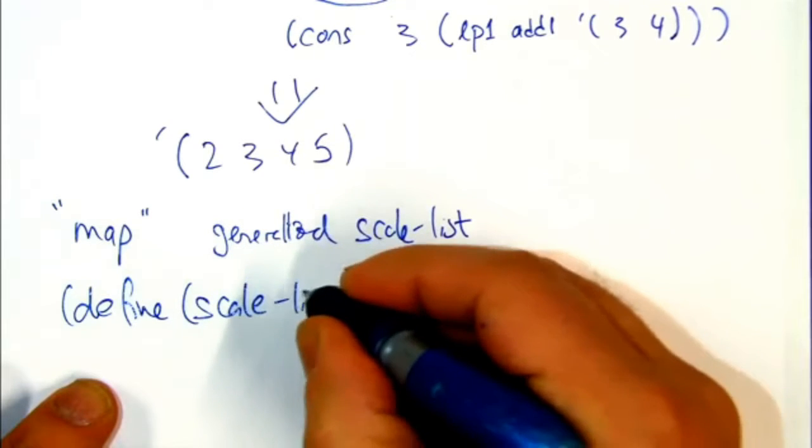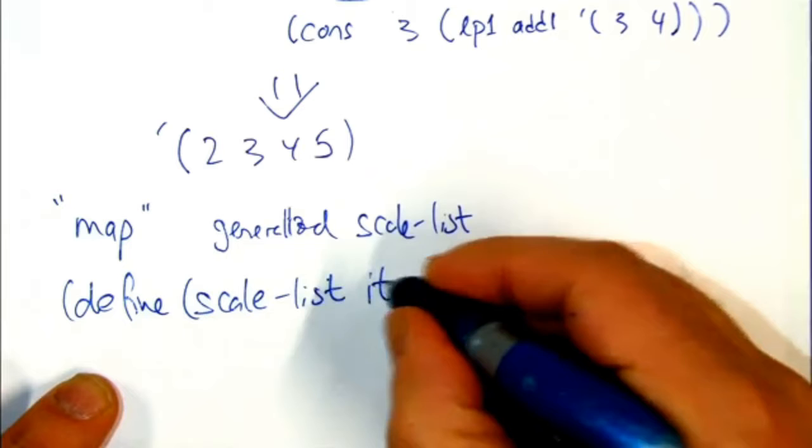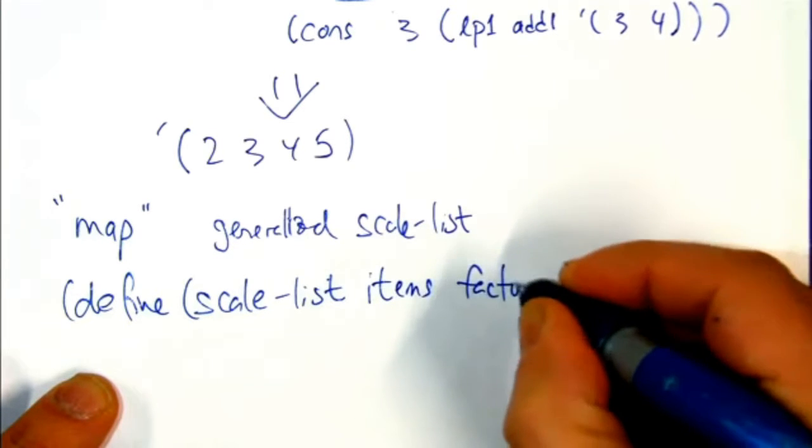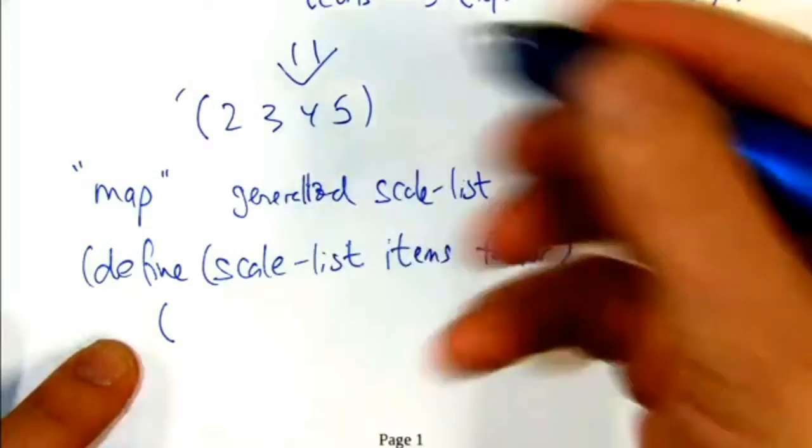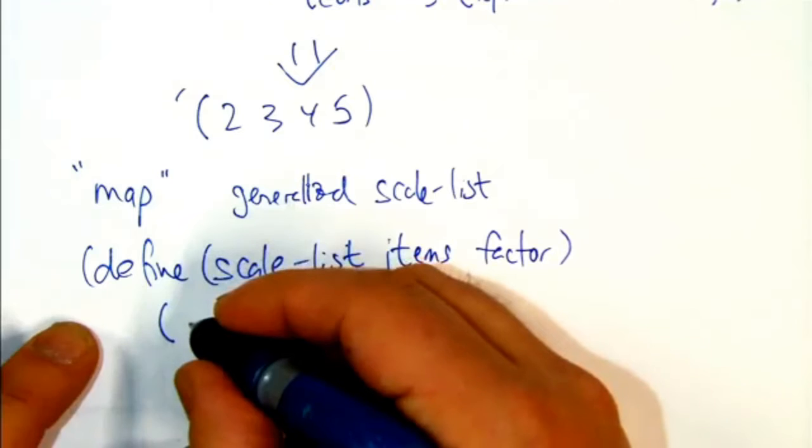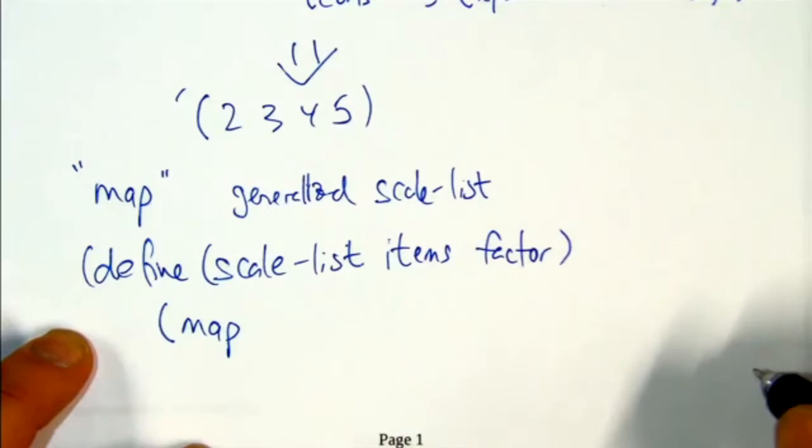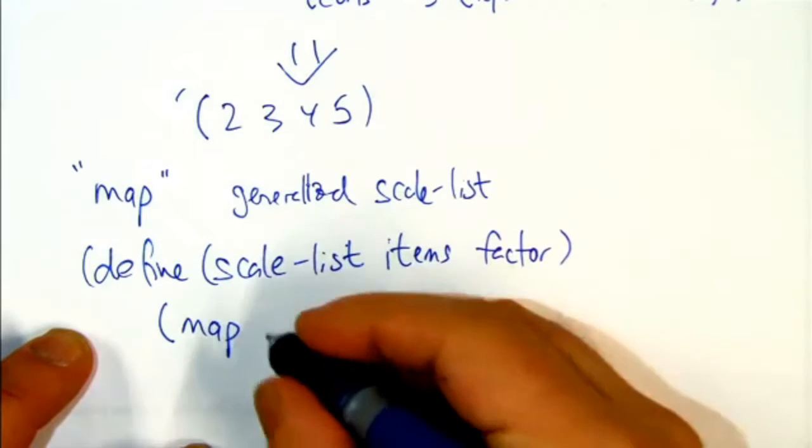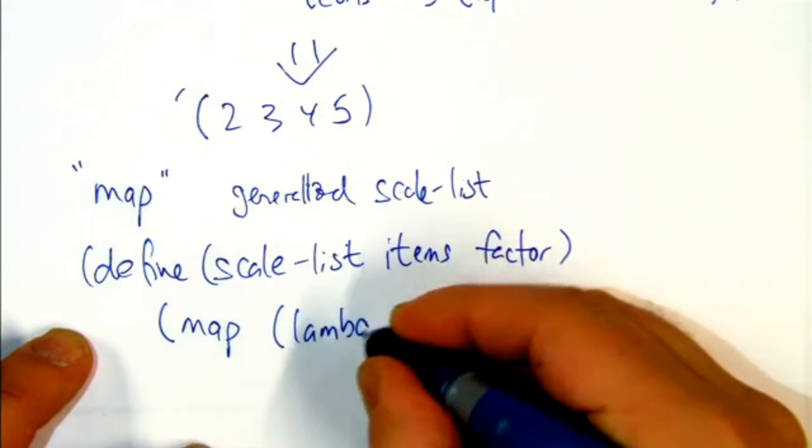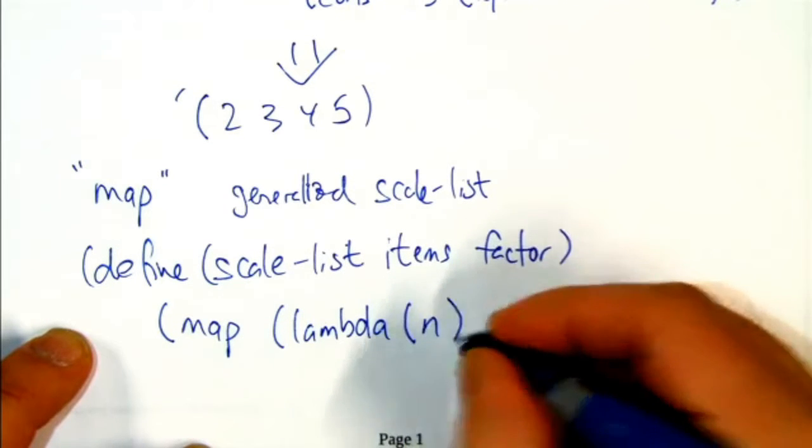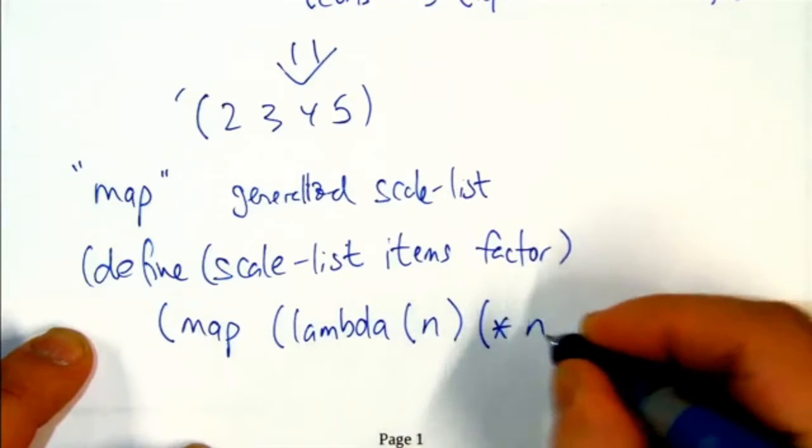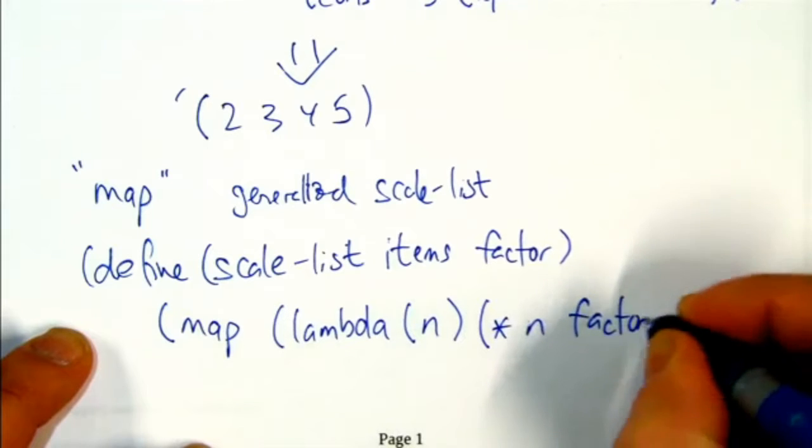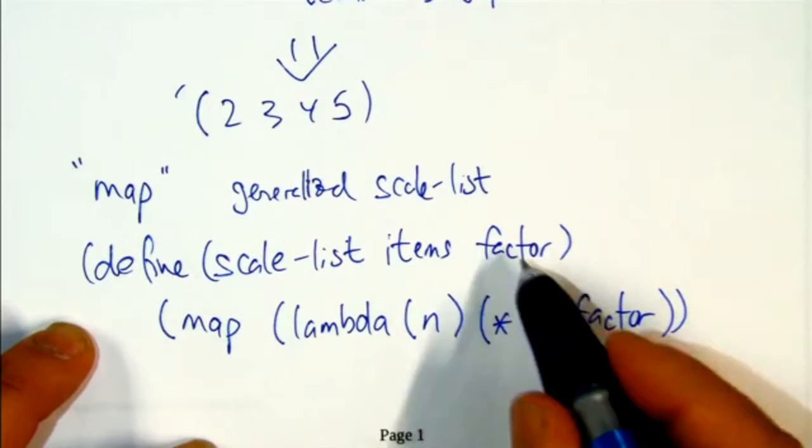Here's where it starts to get fun. So we had scale list, took a list of items and a factor. And Map is also a built-in. It's pretty much implemented like I just wrote it out. So you can map a function over those items. And here we go. We're going to make a function, which is a lambda expression over its input, which multiplies its input by the factor.